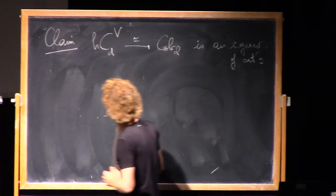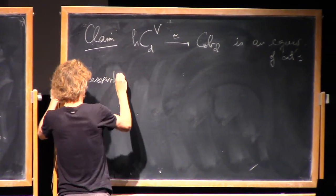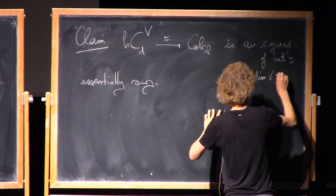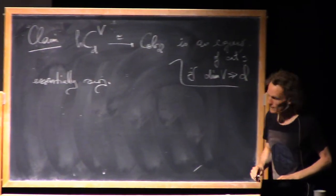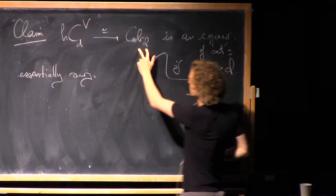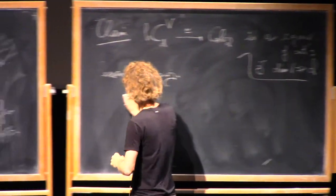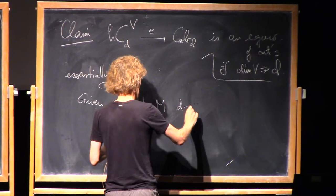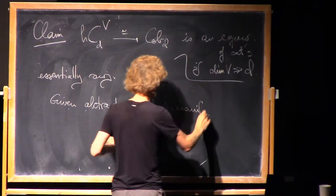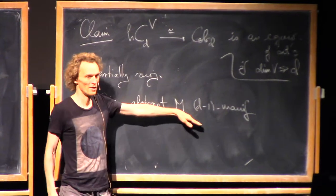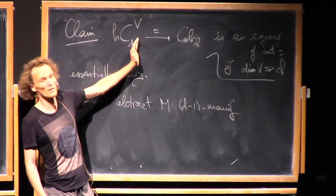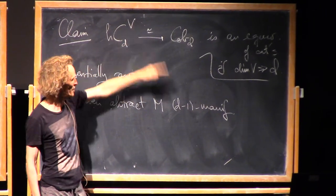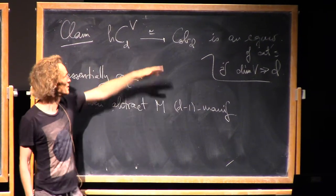Why is this an equivalence of categories? Why is it essentially surjective? Or this is if the dimension of V is big compared to D. Essentially surjective means anything is isomorphic to something from there. So given some abstract closed d-1 manifold, why is it the underlying smooth manifold of some submanifold of some Euclidean space? Well, that's precisely what Whitney embedding theorem tells you. If the dimension of V is at least twice this number, then there exists an embedding into V. Then just take the image of that. It's going to be diffeomorphic.